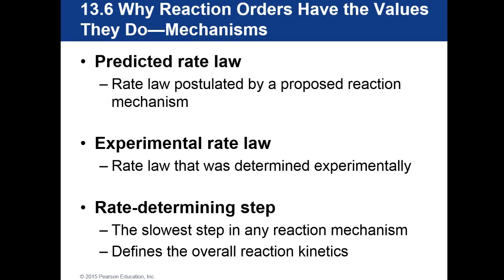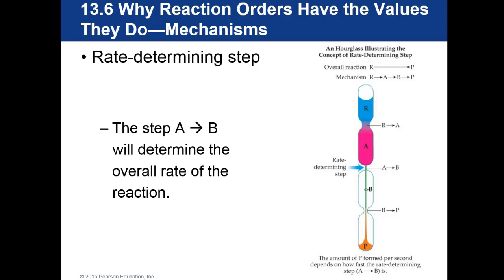There are three key concepts here. The predicted rate law is postulated by a proposed reaction mechanism. The experimental rate law is determined experimentally. And the rate-determining step — the slowest step in any reaction mechanism — defines the overall reaction kinetics. Using an hourglass as an example, step A to B will determine the overall rate of the reaction.